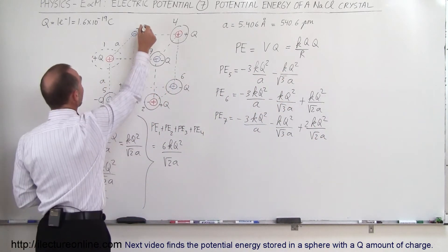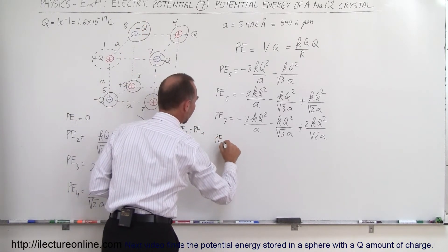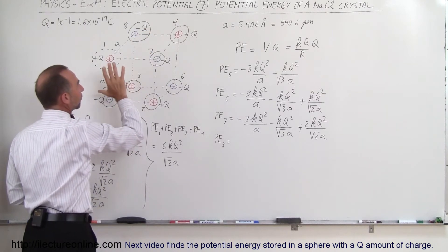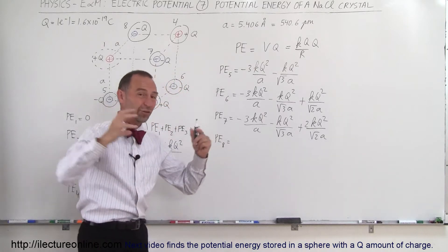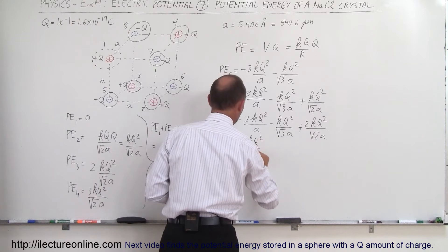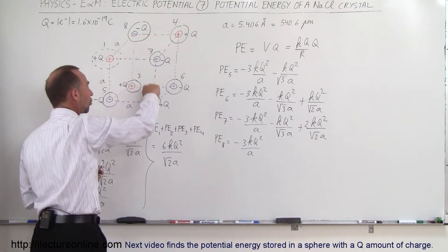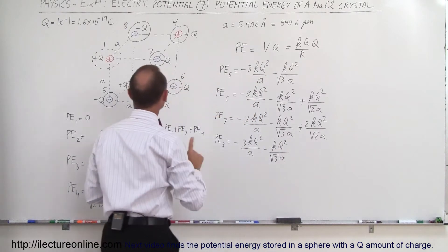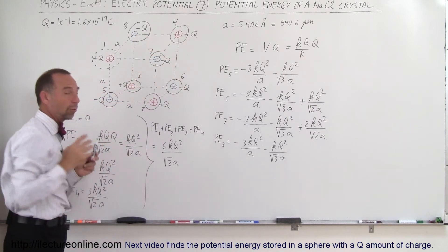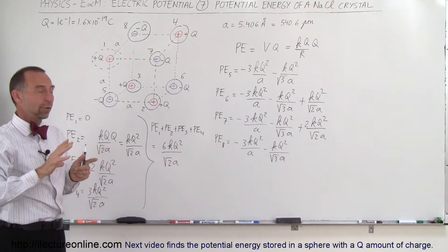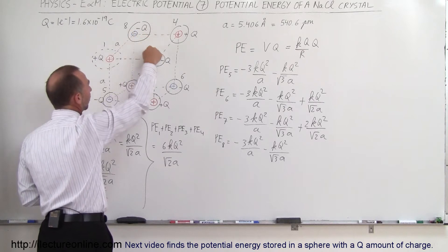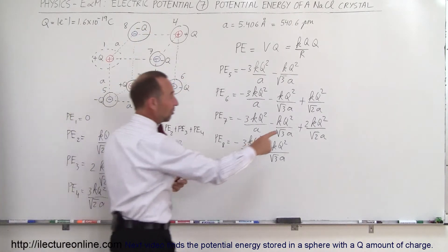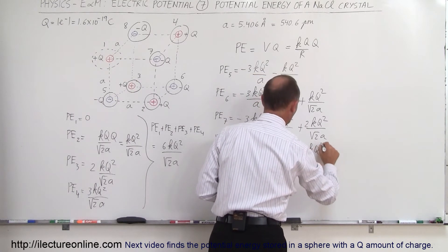And now our last one — charge number eight. This charge is the distance A away from three positive charges, so again we have minus 3 KQ squared over A. This charge is directly diagonally across from one positive charge, so minus KQ squared over the square root of 3 times A. Now this charge is in the presence of three negative charges already there, so there's a force of repulsion. It's diagonally across three faces, so we have plus 3 times KQ squared over the square root of 2 times A.